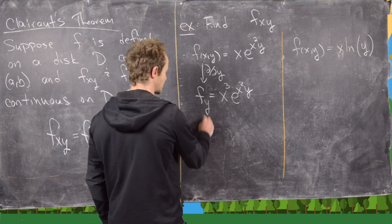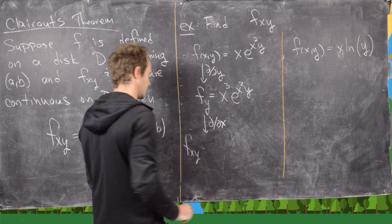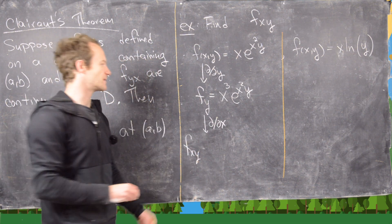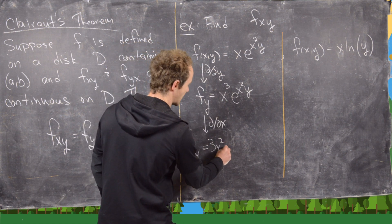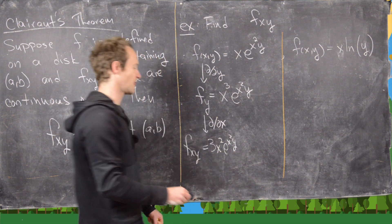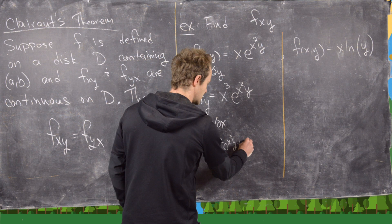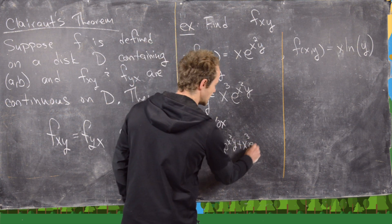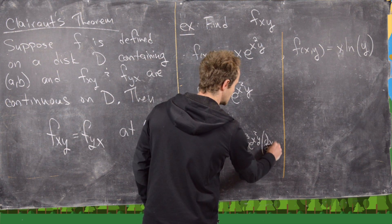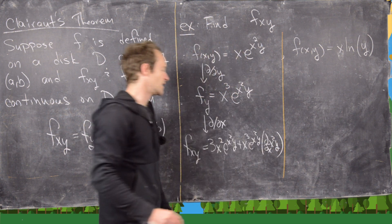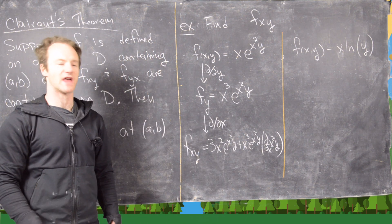Now we take the partial of x³ · e^(x²y) with respect to x to get f_xy, and we have to use the product rule. The derivative of the first term gives 3x² · e^(x²y). Then we need the chain rule for the second part: that's x³ times e^(x²y) times the derivative of x²y with respect to x.